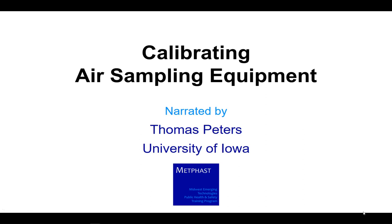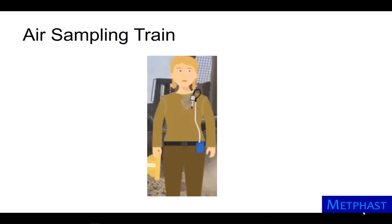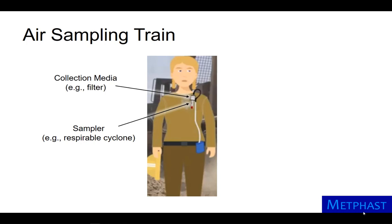Calibrating air sampling equipment. An air sampling train is used to collect a sample of hazardous gas or aerosol to assess exposures. A sample of air is pulled in from the breathing zone through a sampler, here a respirable sampler. The air then passes through collection media, here a filter for respirable sampling, and tubing.